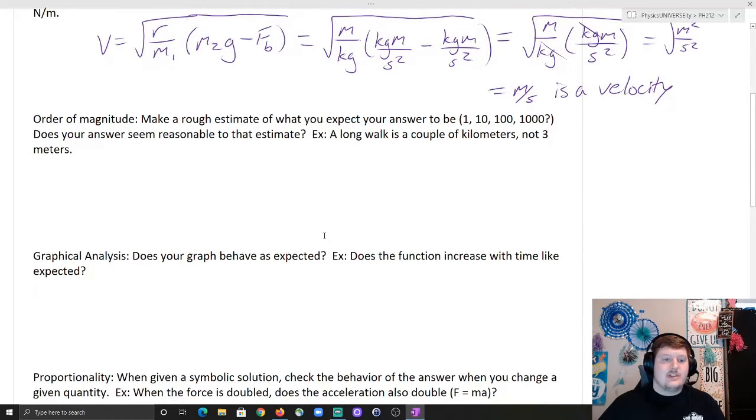Order of magnitude, really straightforward. Make a rough estimate for what you expect your answer to be. Rough estimate in terms of order of magnitude, so 1, 10, 100, 1,000. Does your answer seem reasonable to that estimate? Example, a long walk is a couple of kilometers, not three meters.